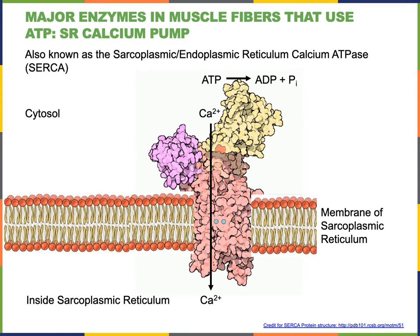Another major enzyme found in muscle fibers that uses a large amount of ATP is the sarcoplasmic reticulum calcium pump, also known as the SERCA pump, standing for sarcoplasmic/endoplasmic reticulum calcium ATPase. ATPase tells us that this enzyme performs hydrolysis of ATP. The SERCA pump performs active transport to move calcium ions from the cytosol into the sarcoplasmic reticulum, sequestering calcium there and lowering cytosolic calcium levels, enabling muscles to relax.